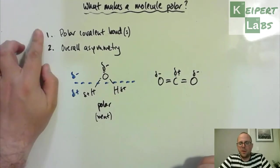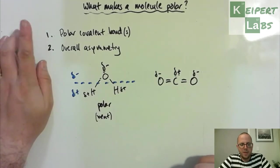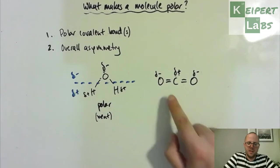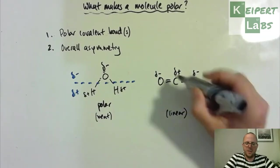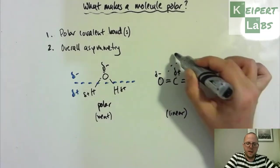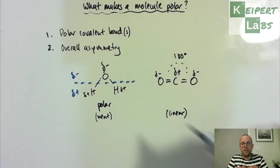We tick the polar covalent bond. However, if you look at this molecule, we see that this is what we call a linear structure. It's 180 degrees, if we look at that angle over here. It all lies in a straight line.